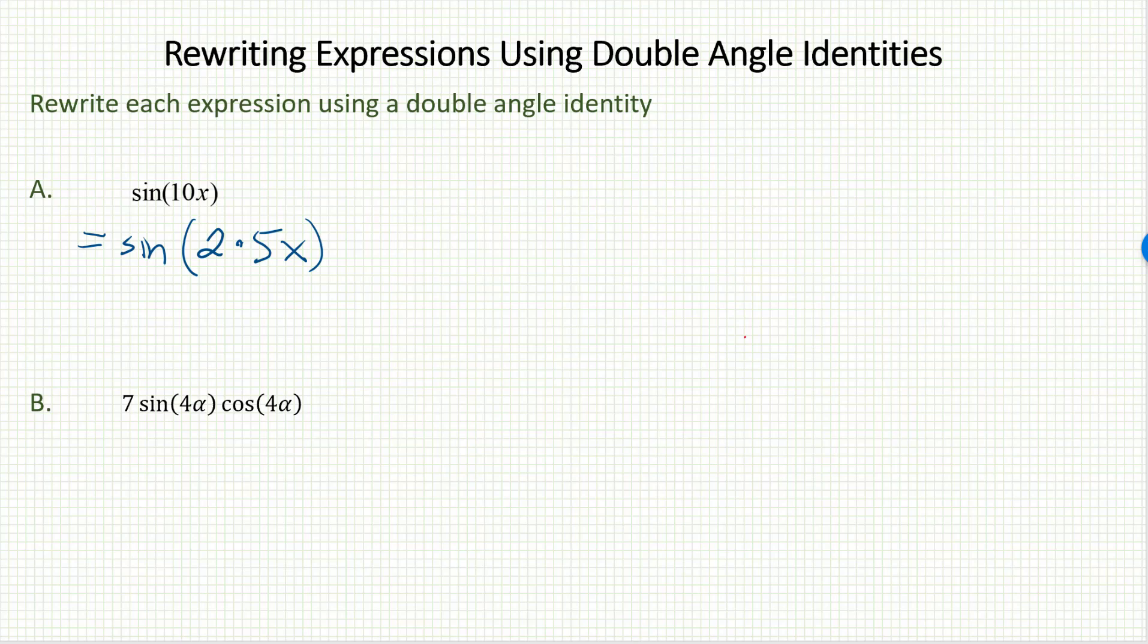Notice that now I have sine of 2 times an angle. Let's jot down our double angle identity for sine. It was sine 2θ equals 2 times sine θ times cosine θ.